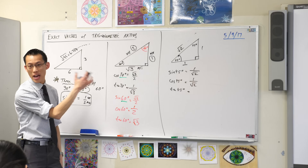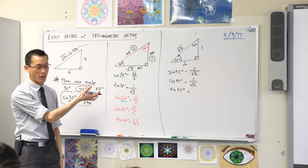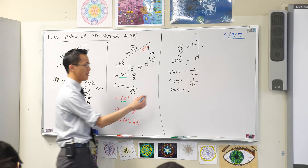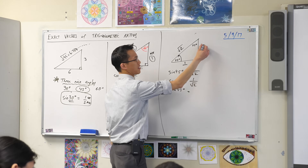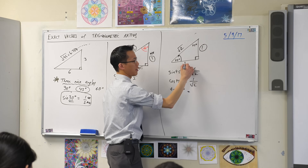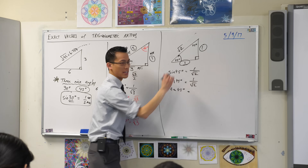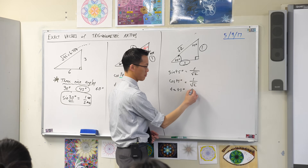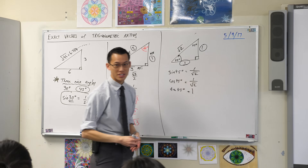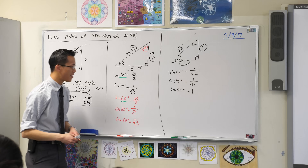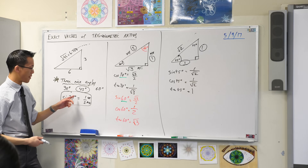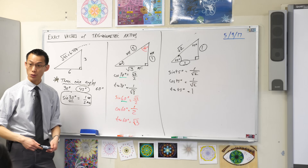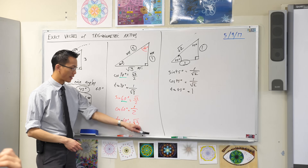And so lastly, when you have a look at tan 45 — tan is opposite on adjacent. Here's the opposite, here's the adjacent, so it's just going to be equal to one, which is the other nicest ratio you can get. If you pop in tan 45 on your calculator, you'll get one.